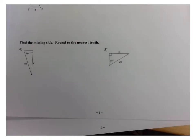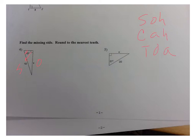Now we're into some new learning. They're asking me to find the missing side. Here's the angle they gave me. This side is the hypotenuse because it's opposite the right angle, and the side they're looking for is the opposite side. I need to ask which trig ratio uses opposite and hypotenuse. Thinking about SOHCAHTOA, sine is opposite over hypotenuse. So I'm going to write a proportion: the sine of 70 degrees equals X divided by 10.